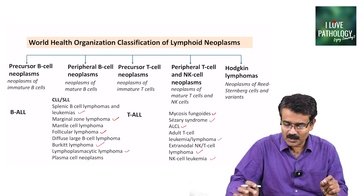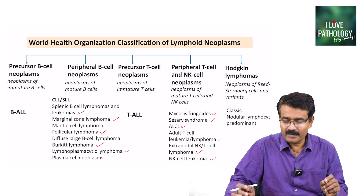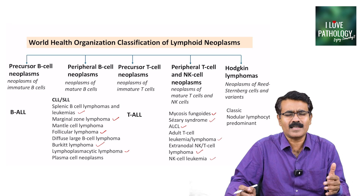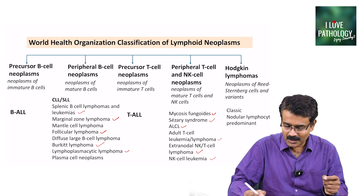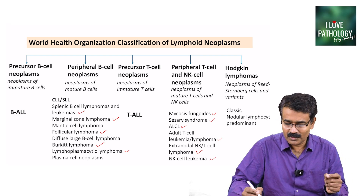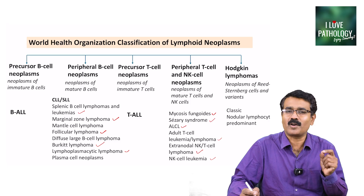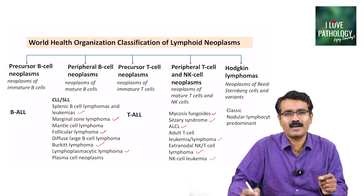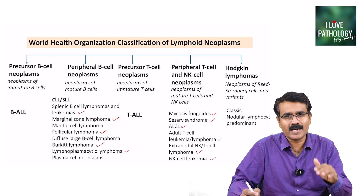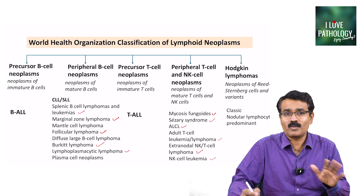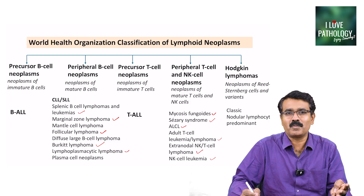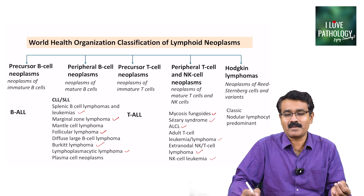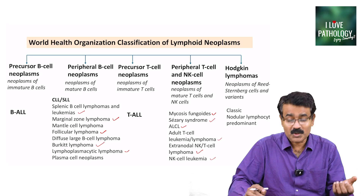The last category is Hodgkin lymphoma, which includes classic Hodgkin lymphoma and nodular lymphocyte predominant Hodgkin lymphoma. Classic Hodgkin lymphoma is further categorized into four different types: mixed cellularity Hodgkin lymphoma, lymphocyte-rich, lymphocyte predominant Hodgkin lymphoma, and so on.